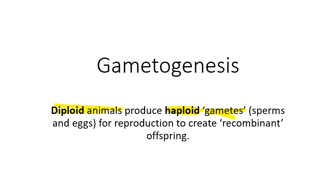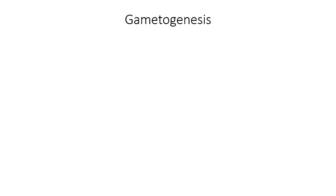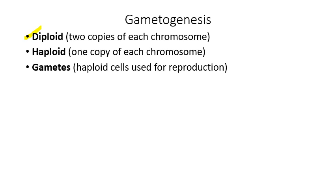When we want to reproduce, we have to produce haploid gametes — a process called gametogenesis. Diploid means having two copies of each chromosome and two copies of each gene. Haploid means you have only one. Gametes are haploid cells made by diploid organisms specifically for the purpose of reproduction.